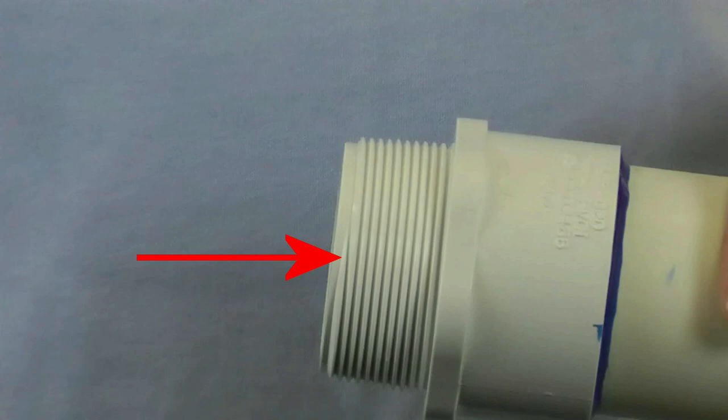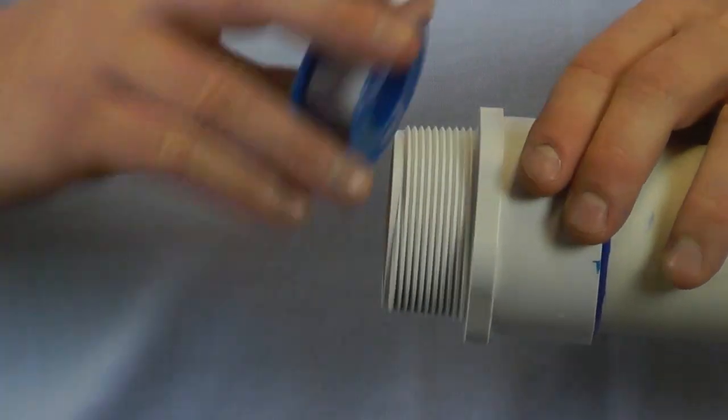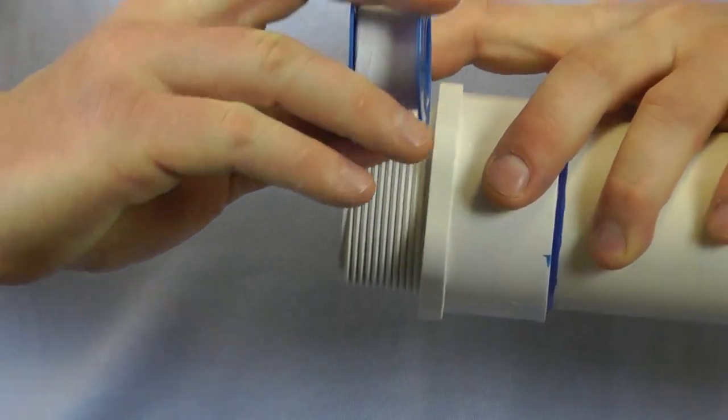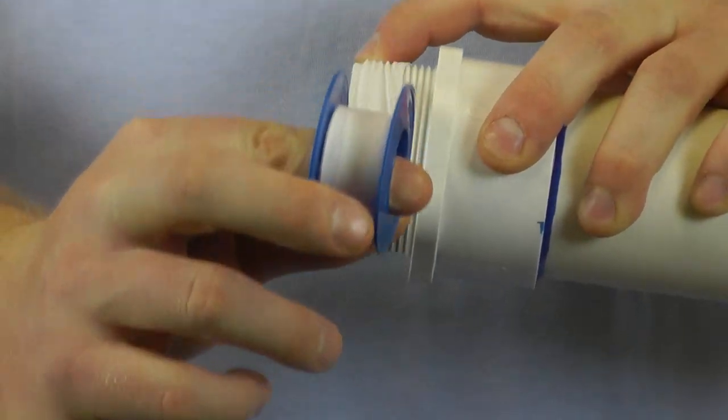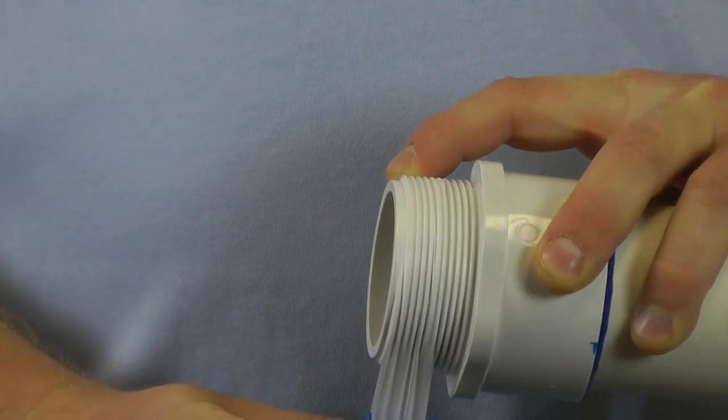This will incorrectly leave excess tape in the waterway of the connection. Wrap tape in the direction of the threads by holding one end while pulling the tape tightly into the threads.